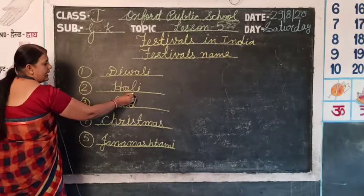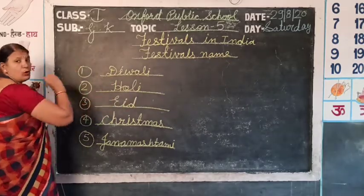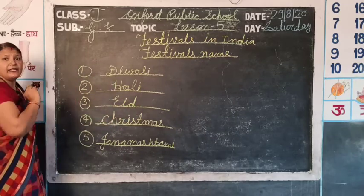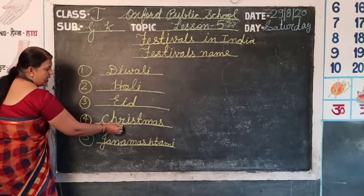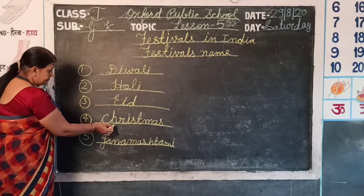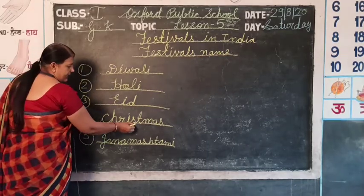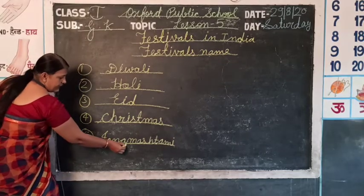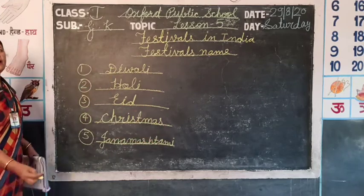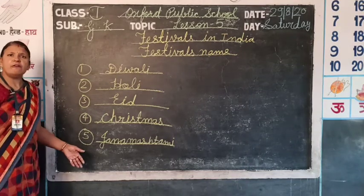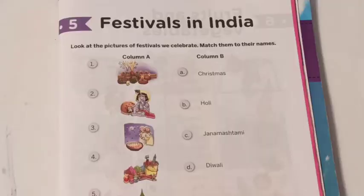Second: H-O-L-I, Holi. Four: C-H-R-I-S-T-M-A-S, Christmas. Five: J-A-N-A-M-A-S-H-T-A-M-I, Janmashtami. Diwali, Holi, Eid, Christmas and Janmashtami are common festivals. OK? So look at the book. All students, open the book. We will read from the book, Lesson Five.